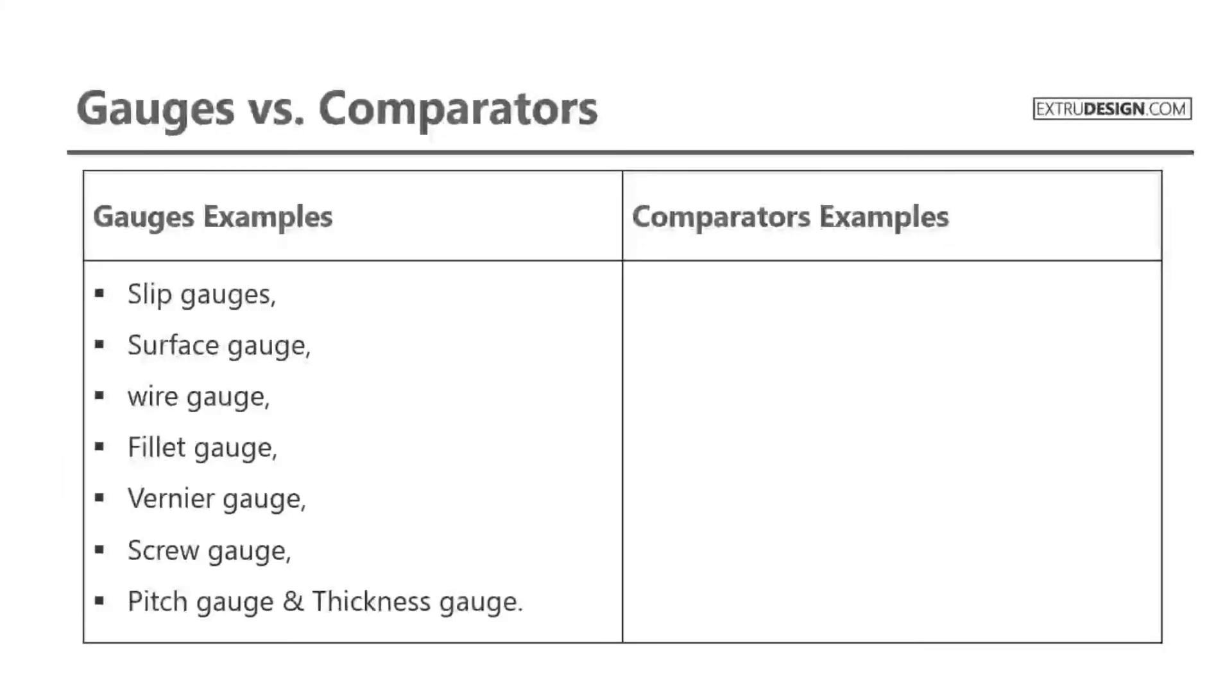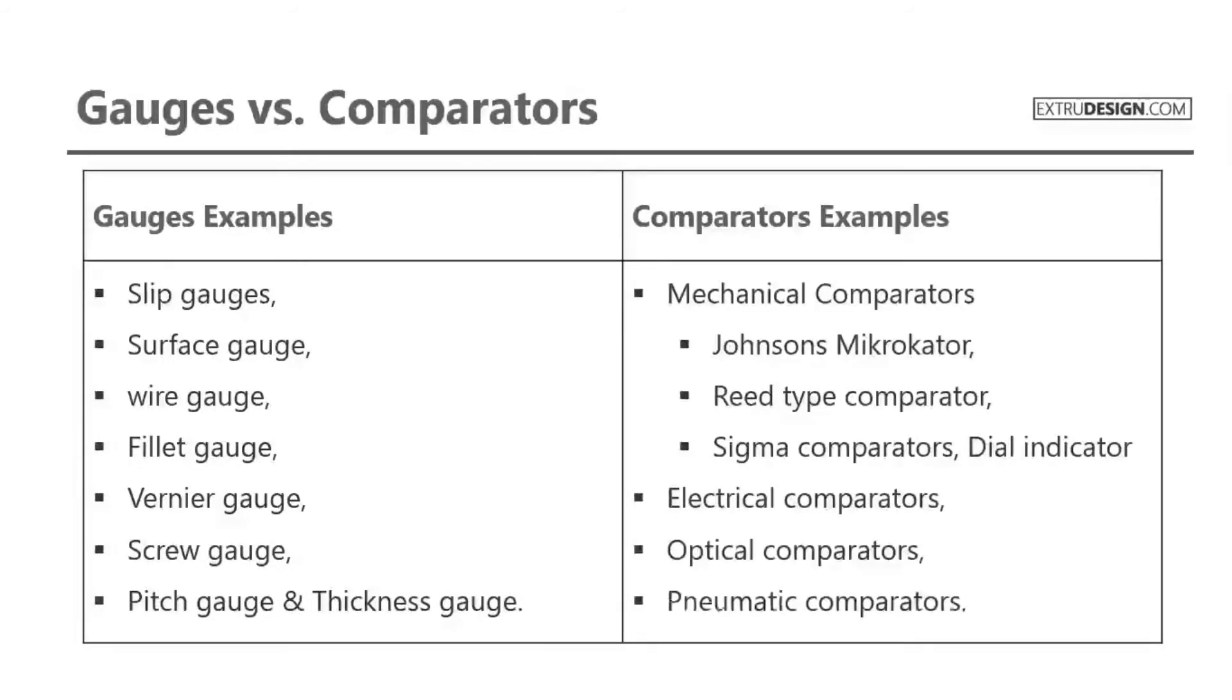Gauges examples are: slip gauges, surface gauge, wire gauge, fillet gauge, vernier gauge, screw gauge, pitch gauge, and thickness gauge.